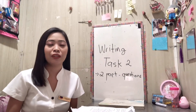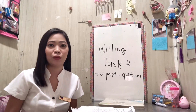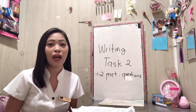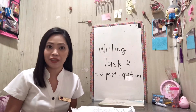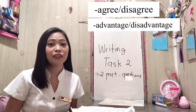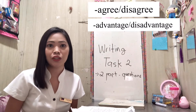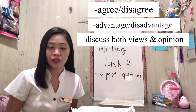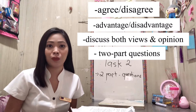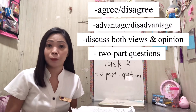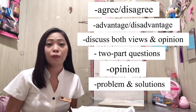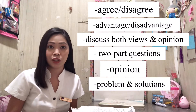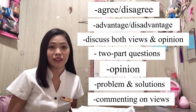There are seven question types in writing task 2. We have agree-disagree, advantage-disadvantage, discussable views, two-part questions, opinion, problem and solution, and commenting on views.